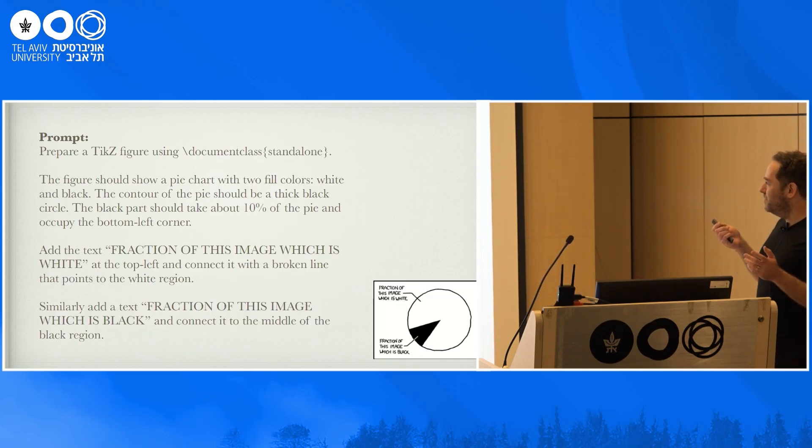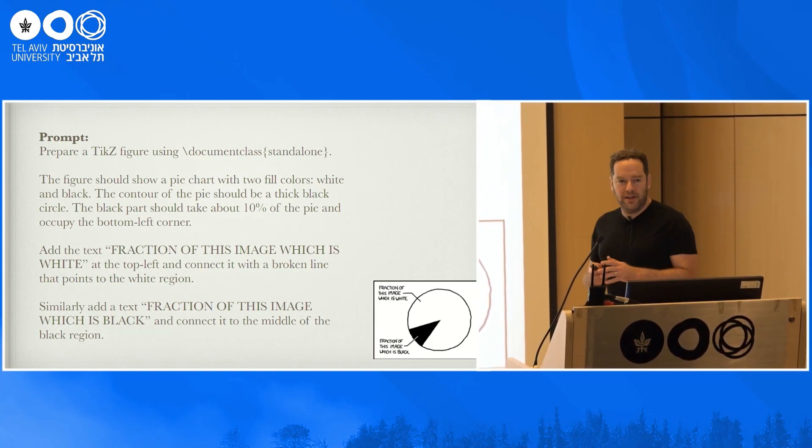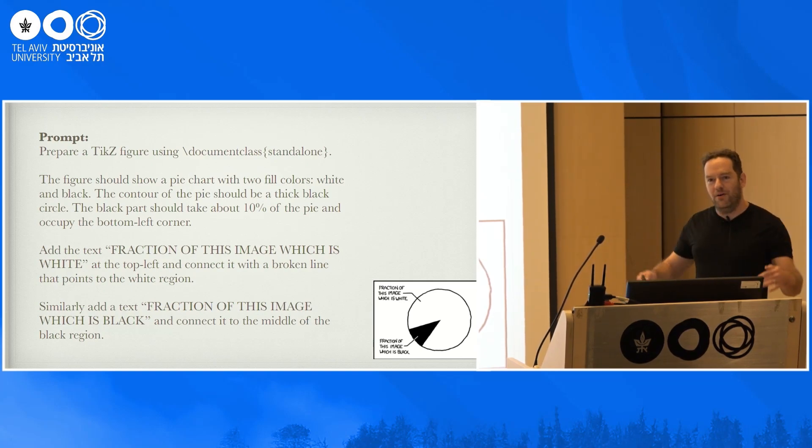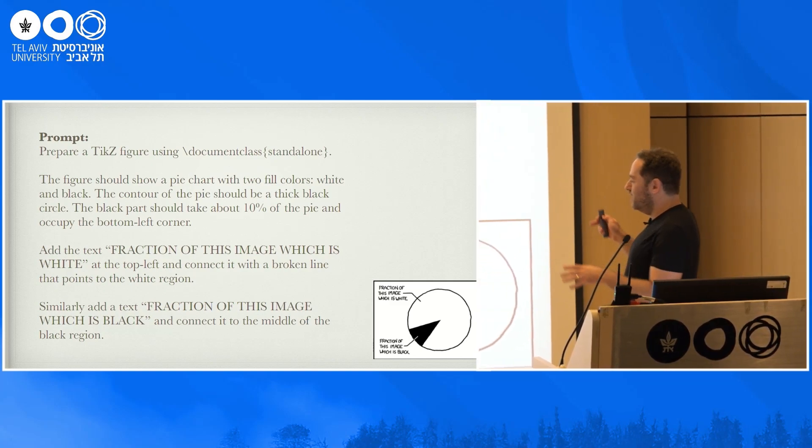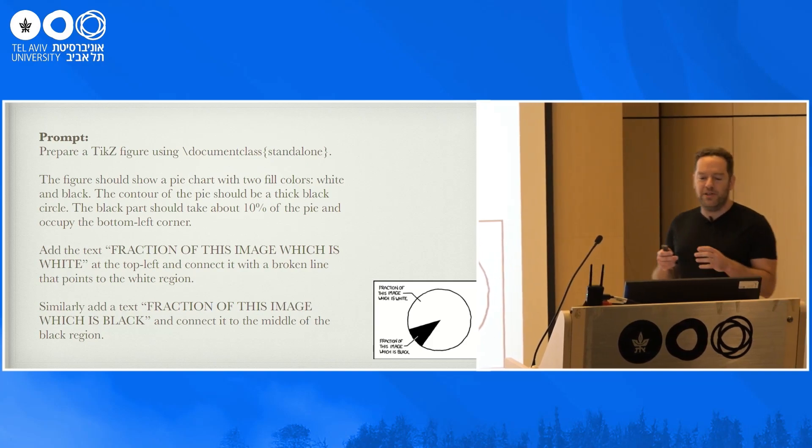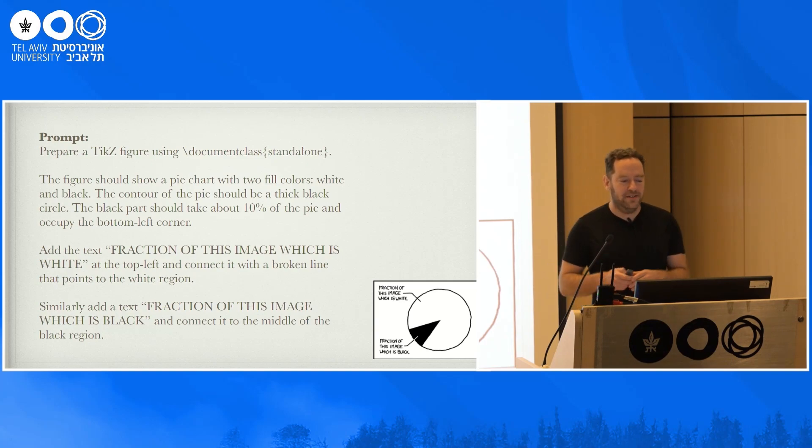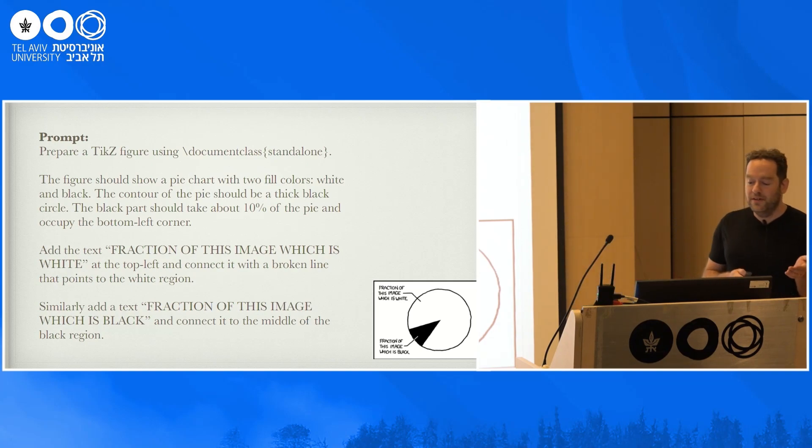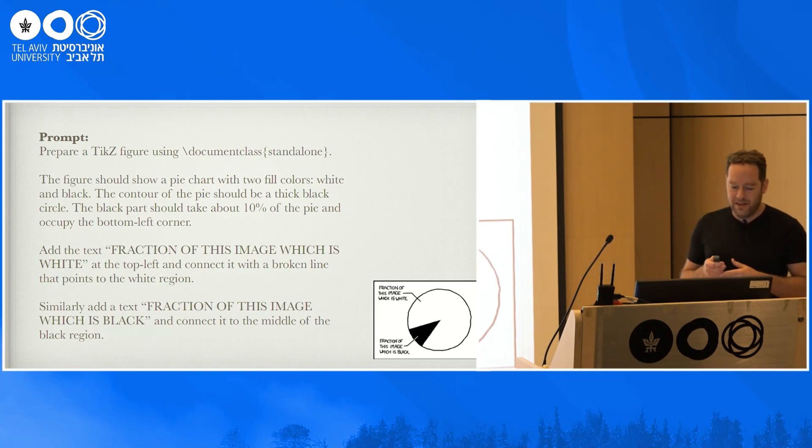So I wrote a prompt that asks to prepare a TikZ figure using a document class standalone. That means without a whole A4 page around it, just the plot itself. And then I described what I want from the plot. So I wanted to show a pie chart with two colors, white and black. And there should be some thick black circle around it, et cetera. And I also asked to add the text at the top left and the bottom left, and gave it instructions on how to connect and where to place it, but didn't specifically say this line should be kind of broken. I just let the models figure it out.